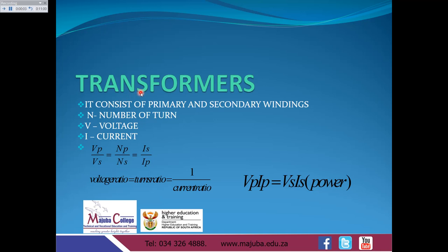Let's take transformers. Transformers consist of the primary and the secondary windings. We've got N as the number of turns, V as the voltage, and I as the current. The voltage in primary divided by the voltage in secondary equals the number of turns for primary divided by the number of turns for the secondary, which also equals the current in secondary over the current in primary. So the voltage ratio equals the turns ratio, which equals 1 over the current ratio. The power for the primary windings will be equal to the power for the secondary windings.